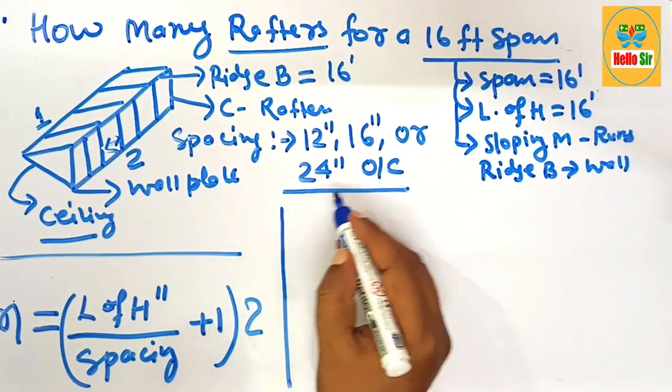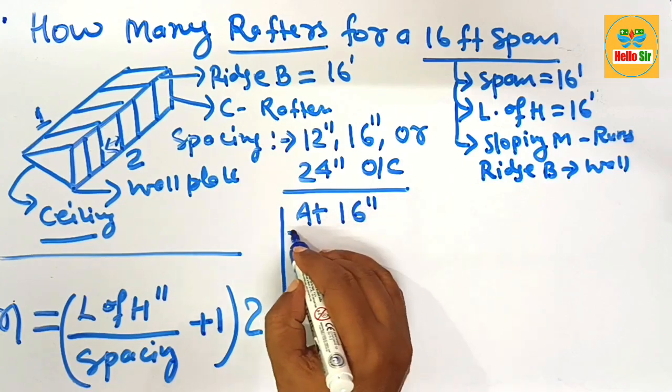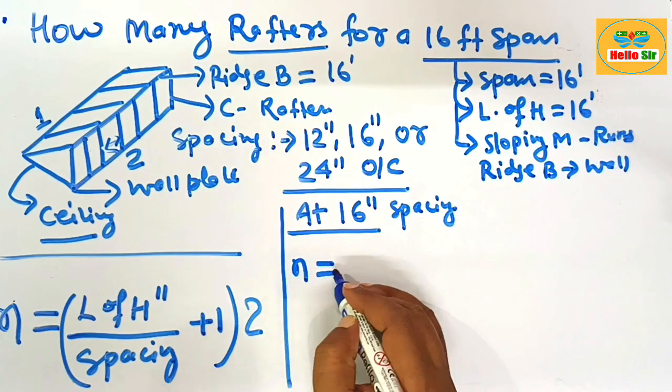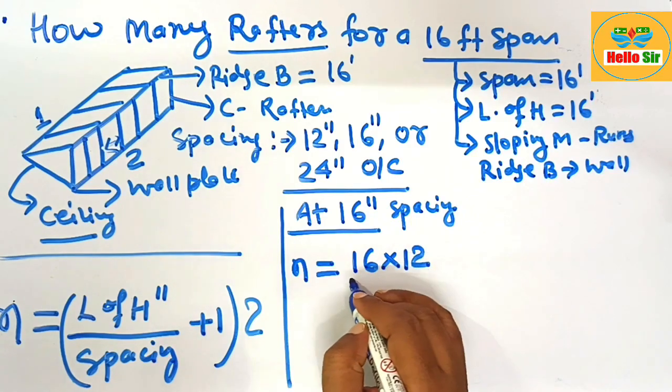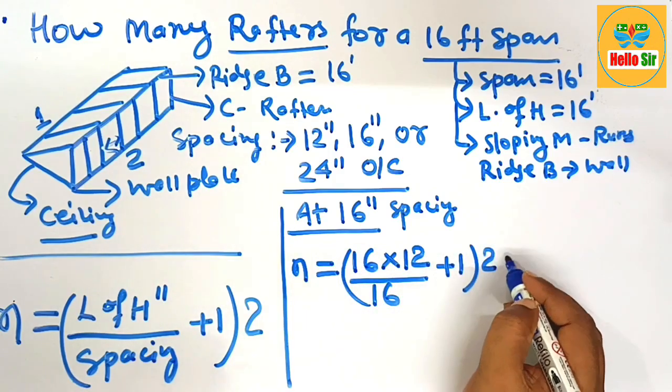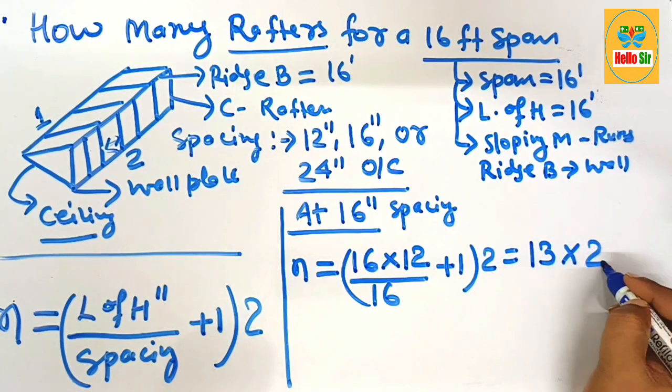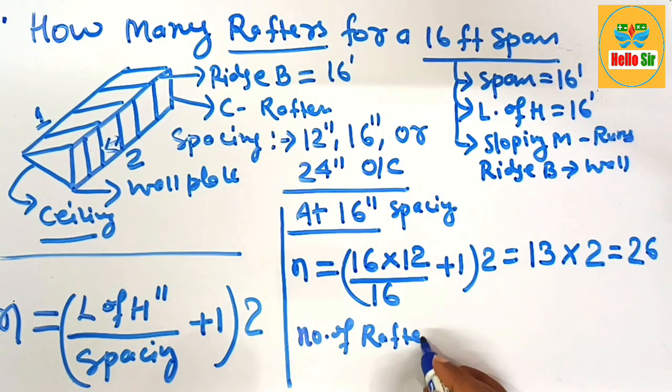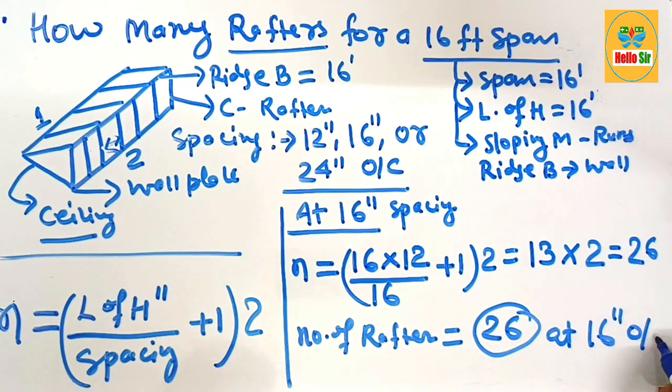Now calculate the number of rafters required for a 16-foot distance at a standard spacing of 16 inches. At 16-inch spacing, how many rafters are required? n equals the length of the house, which is 16 feet. Convert this to inches by multiplying by 12. Divide by the center spacing of 16, plus one, and multiply that number by 2. That equals 13 multiplied by 2, which equals 26 rafters. You need 26 rafters at 16-inch center spacing.